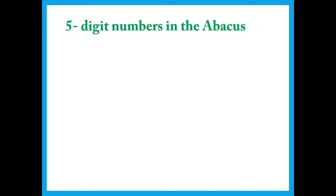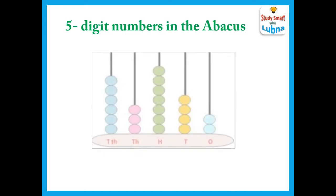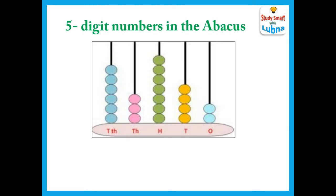Now I am going to show you the 5-digit number in the abacus. Here this example is given for you. You can see this is an example of an abacus. In this example we are having different beads attached to the rods. You can see that in the first rod we are having 2 beads, then 4 beads, 7 beads, 3 beads and 6 beads.